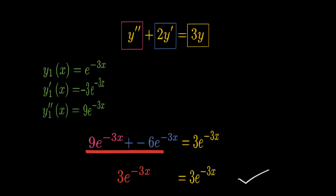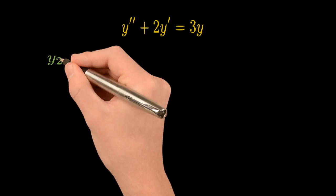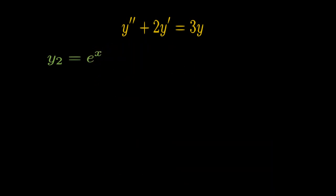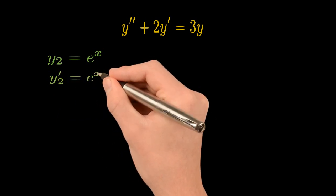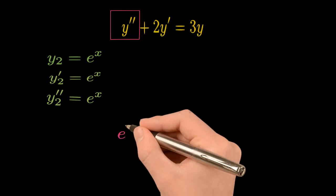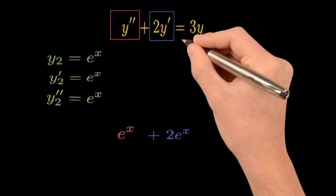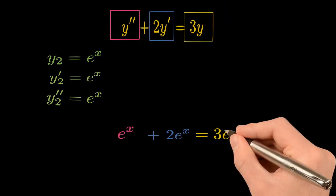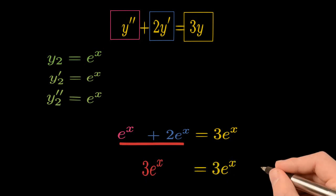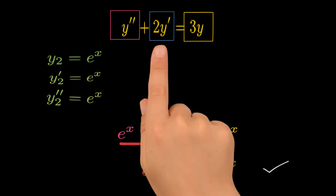But it is not the only solution. For example, y₂ = e^x is also a solution to this differential equation. The first derivative of e^x is e^x, and the second derivative is also e^x. So substituting in: e^x plus two times e^x equals three e^x, which is absolutely true. So y₂ is also a solution to this differential equation.